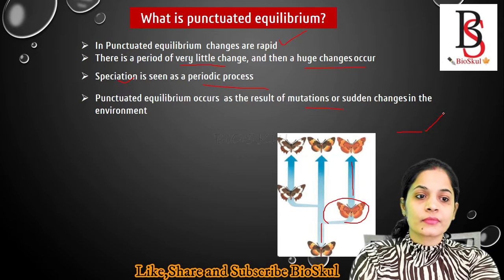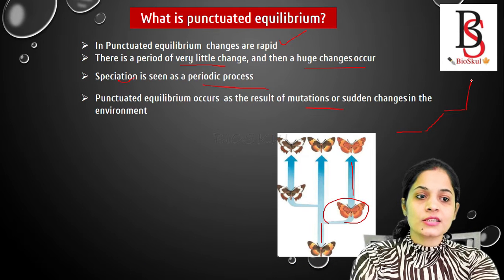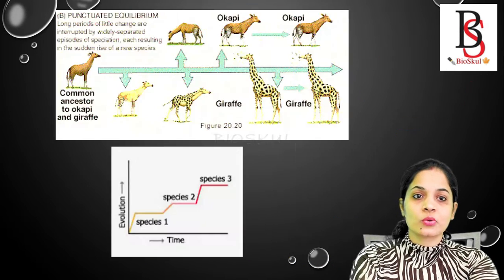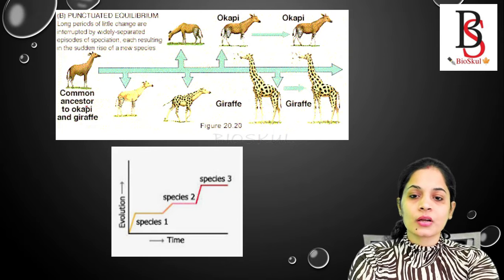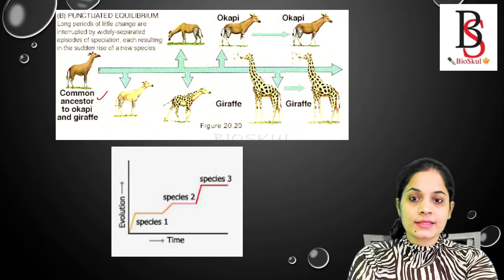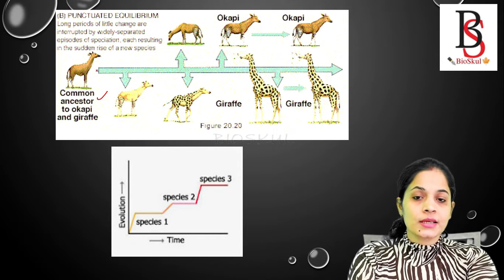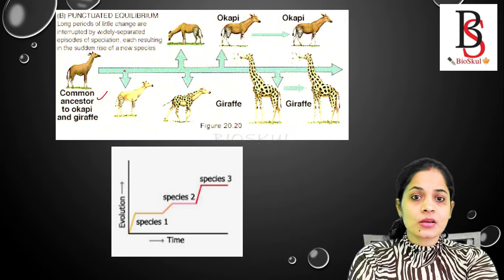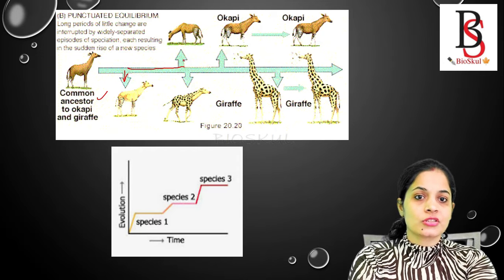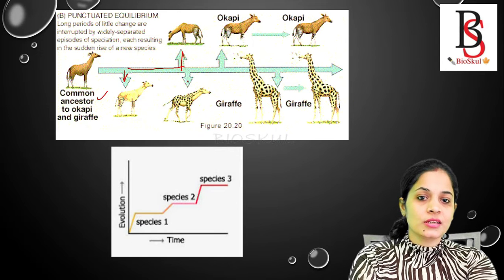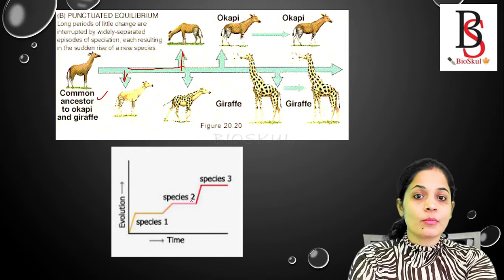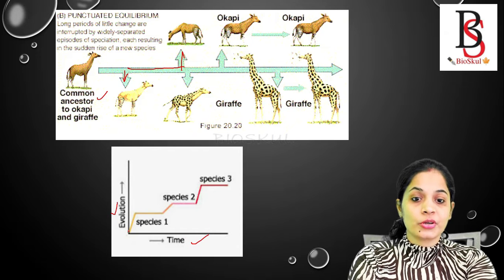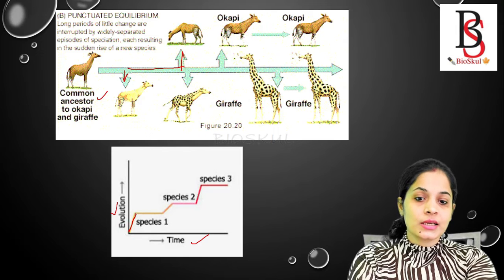This is punctuated equilibrium. Another example: the common ancestor of okapi and giraffe shows a period of very little or no change, then a sudden change, then no change, then sudden change again. If we plot punctuated evolution over a period of time on a graph, we see a period of no change or very little change, followed by a huge rapid change.